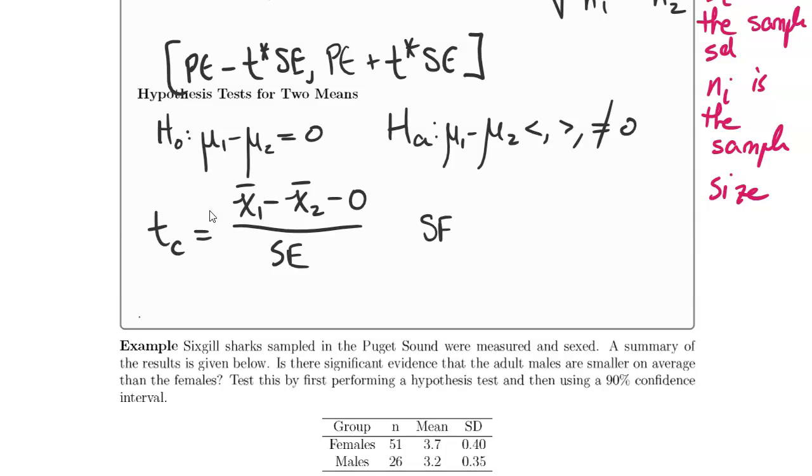The good news is that the standard error is the same as it is in the confidence interval case. Since the standard error for means doesn't have anything to do with the mean itself, the formula is the same both in the confidence interval case and in the hypothesis test case.